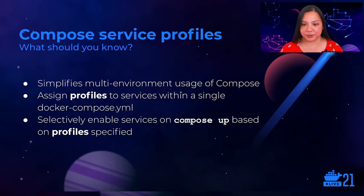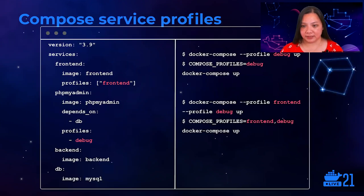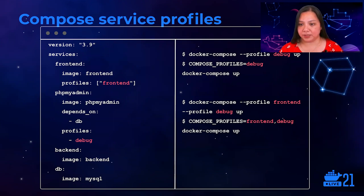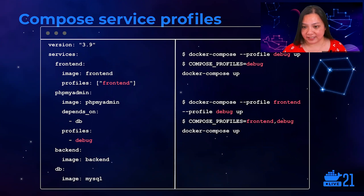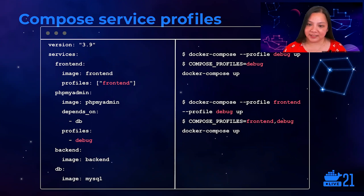Let's take a look at an example. The services frontend and phpMyAdmin are assigned to the profiles frontend and debug respectively, and as such are only started when their respective profiles are enabled. Services without a profiles attribute will always be enabled. In this case, running Docker Compose up would only start backend and the database. We recommend that the core services of your application should not be assigned profiles, so they'll always be enabled and automatically started. Please consider giving Compose Service Profiles a try, and we're eager to hear your feedback.